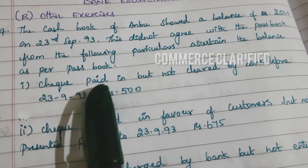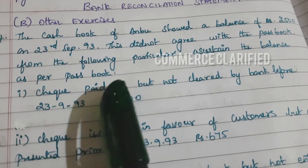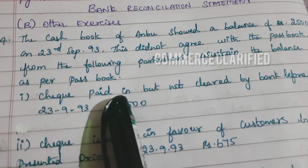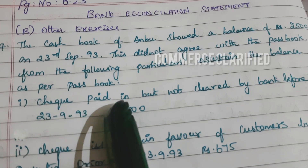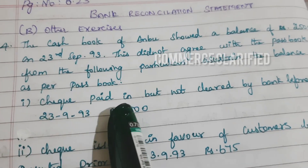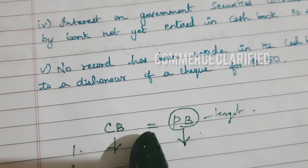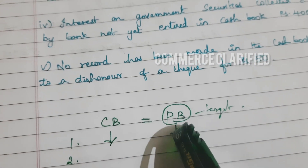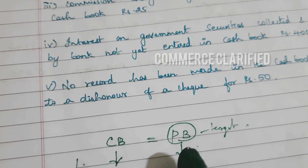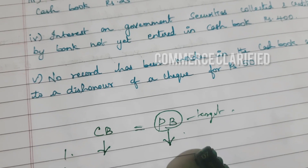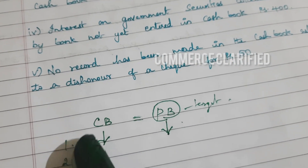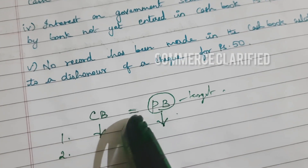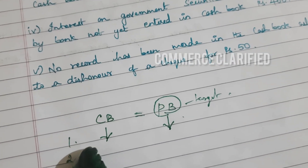Check deposited in our bank but not cleared by bank before 23rd September. Check deposited but not cleared. If you are prepared for cashbook, the answer is passbook. If the balance of passbook has check deposited but bank hasn't cleared it, we will reduce the cashbook. So passbook and cashbook are equal. If you have a balance of cashbook, you will increase the balance by 500.